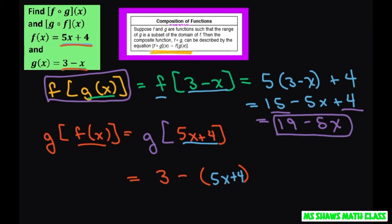Be a little careful with this one. Make sure you distribute this negative. That's like multiplying by -1. So it's going to be 3 - 5x - 4.